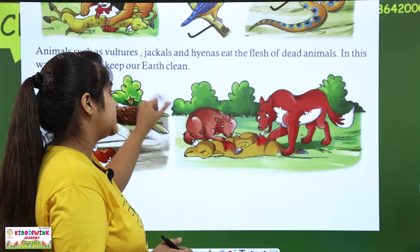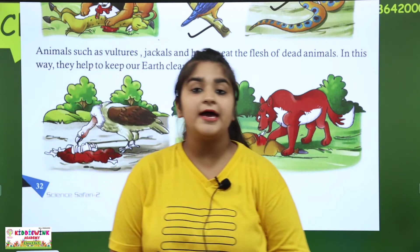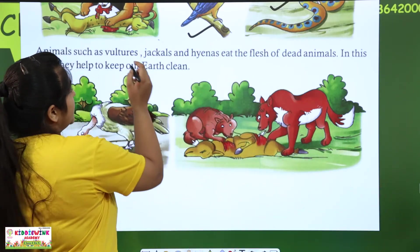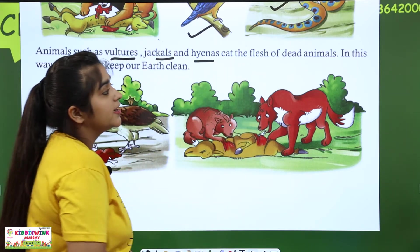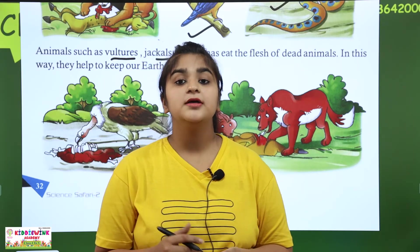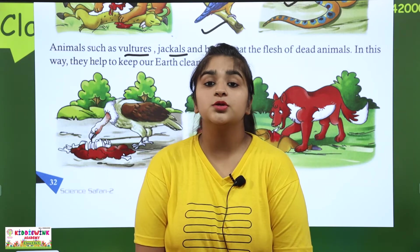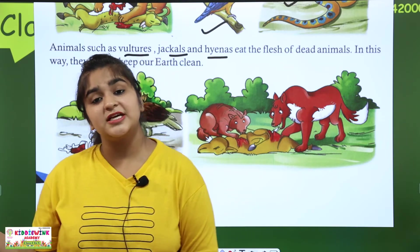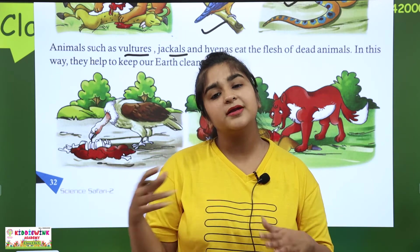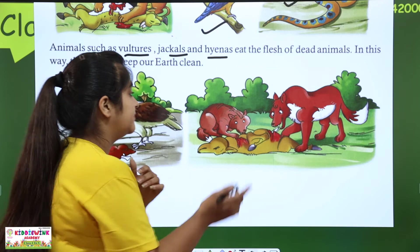Animals such as vultures, jackals and hyenas eat the flesh of dead animals. Animals like lion and tiger kill animals but cannot eat all of them. So vultures, jackals and hyenas eat the dead animals left behind. In this way they help to keep our earth clean.